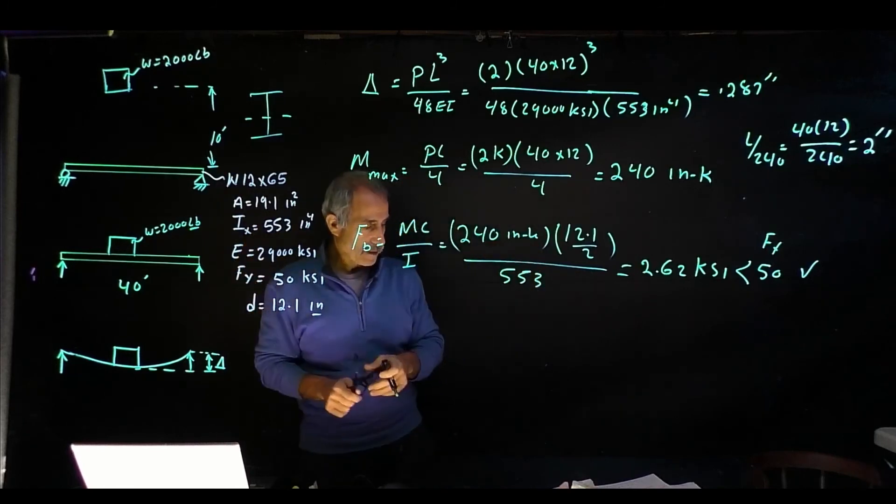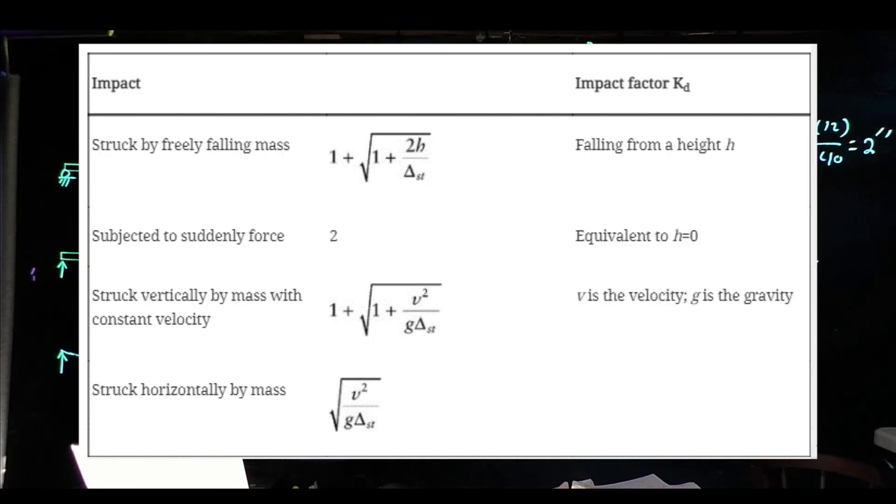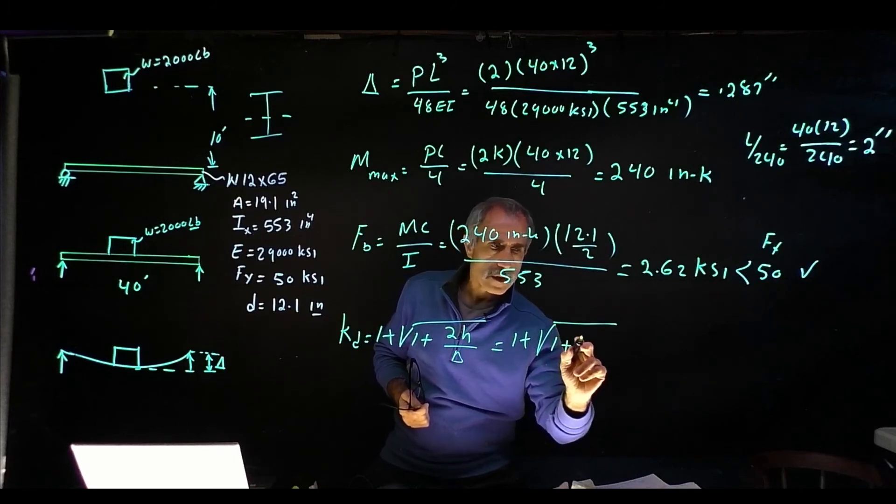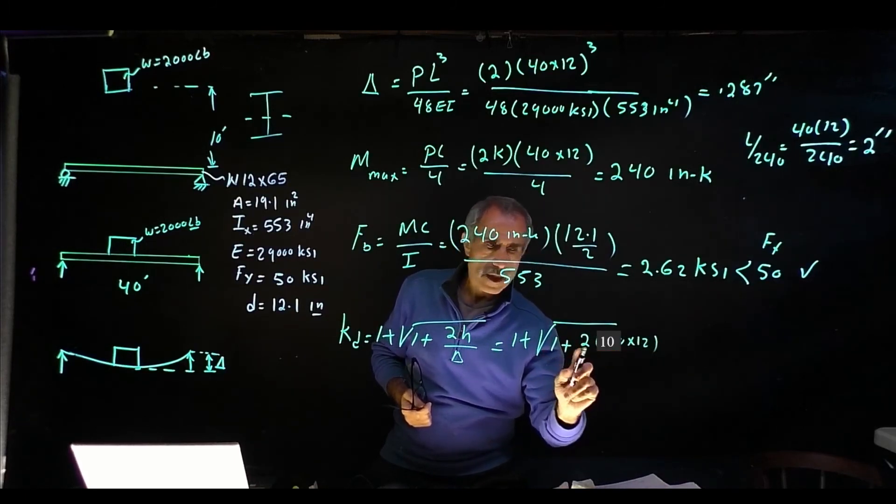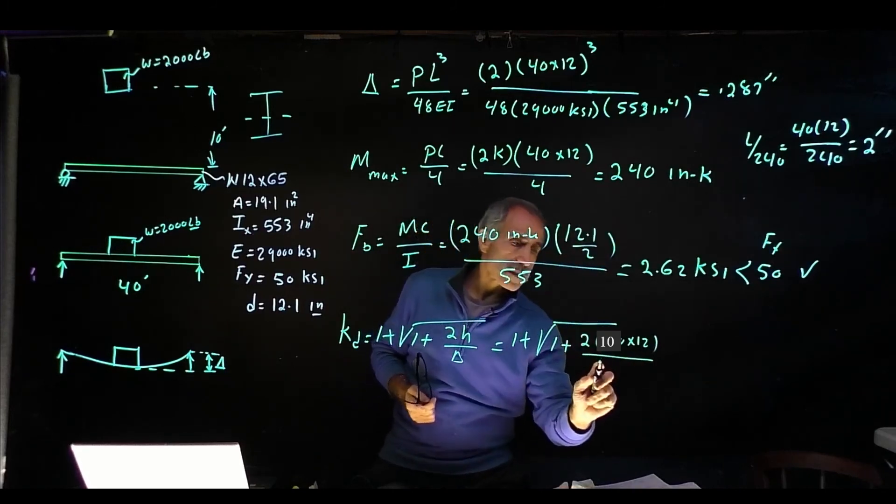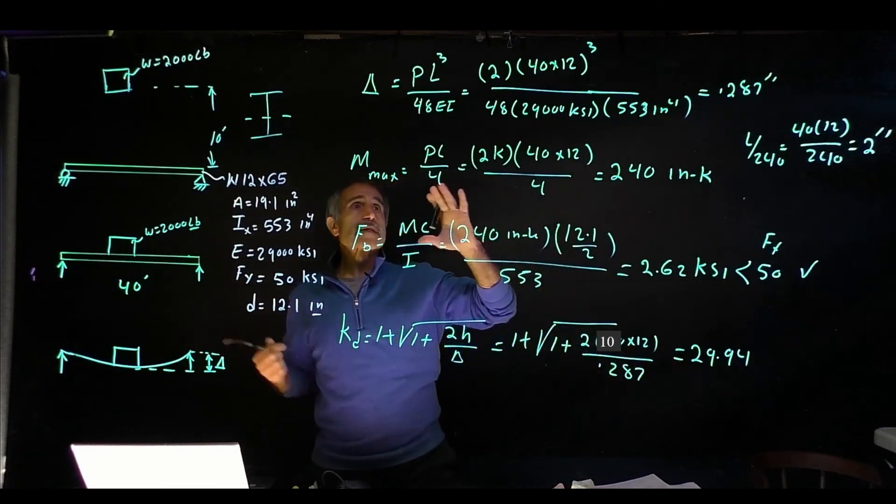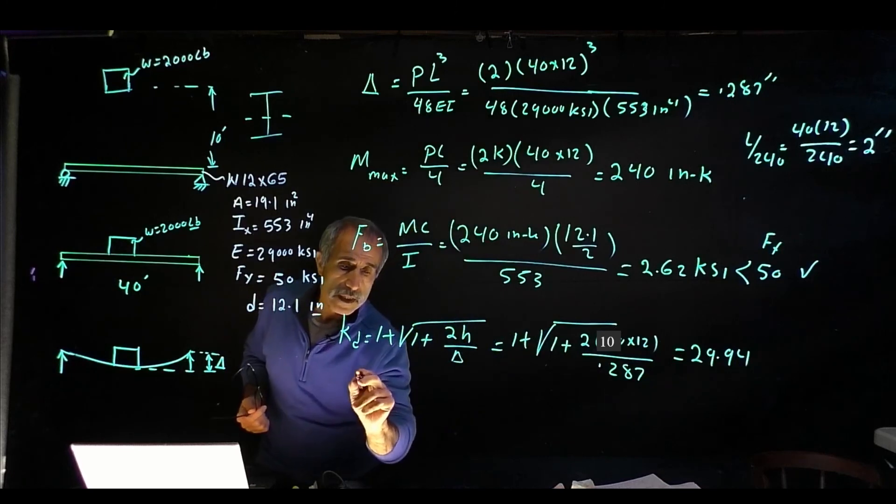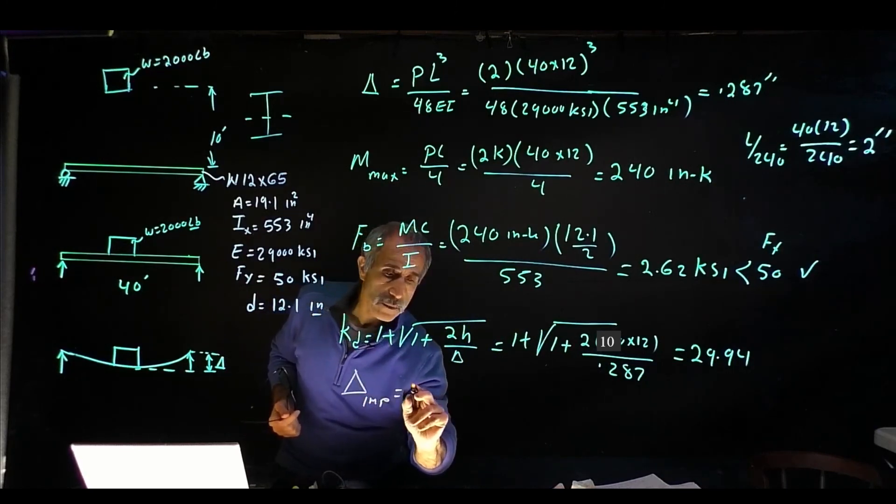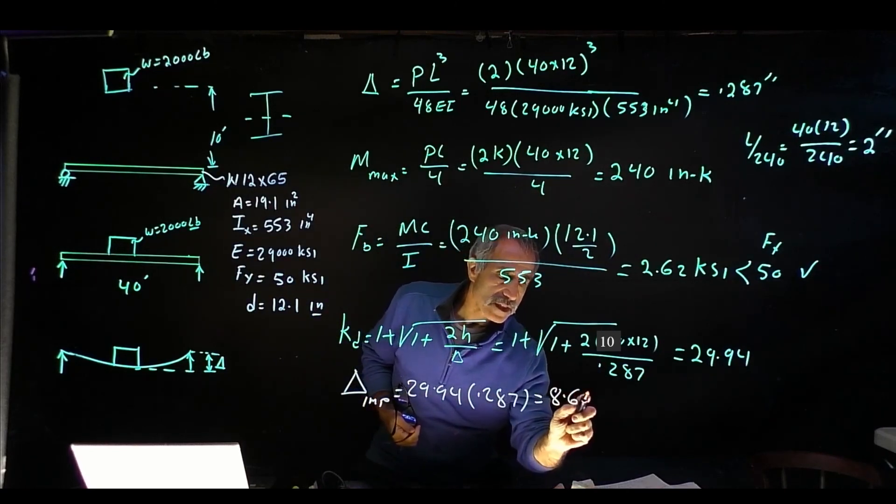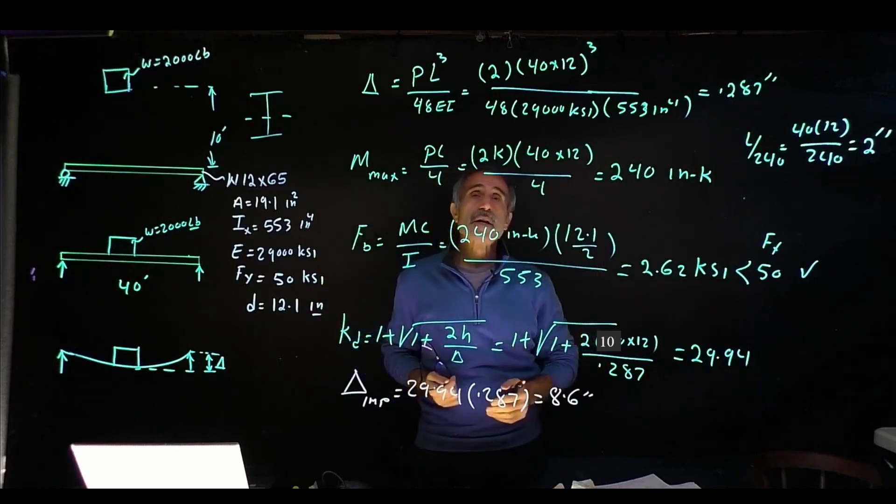However, what happens when you have a bang? To calculate the impact factor we're going to multiply this. Take a look at the table. kd equals 1 plus square root of 1 plus 2 times 12 inches, and delta came out to 0.287, and this comes out to 29.94. If I multiply my factor based on the impact load, that means my deflection is going to come out to, deflection after impact comes out to 29.94 multiplied by 0.287, and that gives me 8.6 inch. That's way bigger than 2 inches, and we know on a floor beam that's a big no-no.